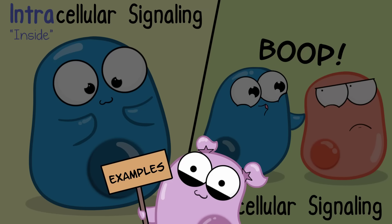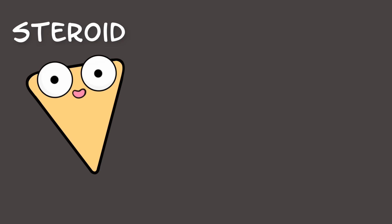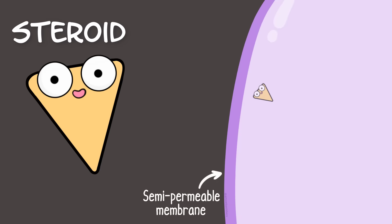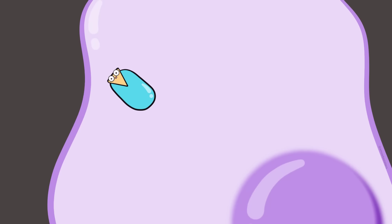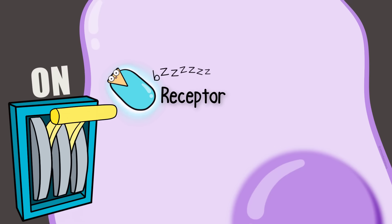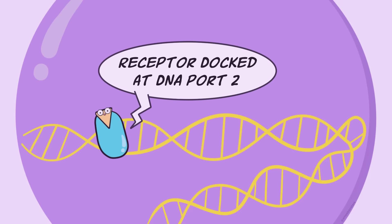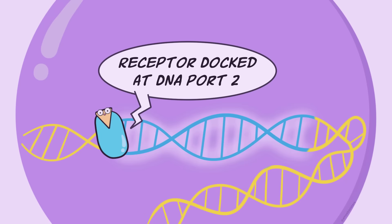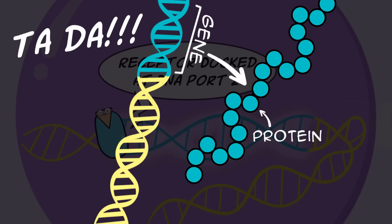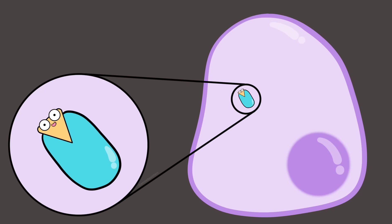Let's look at a few signaling examples. Consider a steroid hormone that travels through the cell's semi-permeable membrane — the steroid hormone is our signal molecule, our ligand. Once inside the cell, it binds to a protein receptor within the cell. Now the protein receptor is active. It travels into the nucleus where the cell's DNA is found, binds to DNA, and is involved in getting transcription of a certain gene going, which eventually can be used to produce a specific protein. This is an example of signaling inside the cell, with a cytoplasmic receptor.